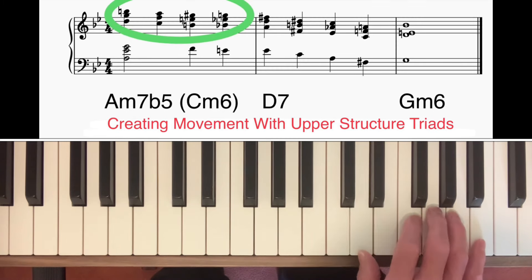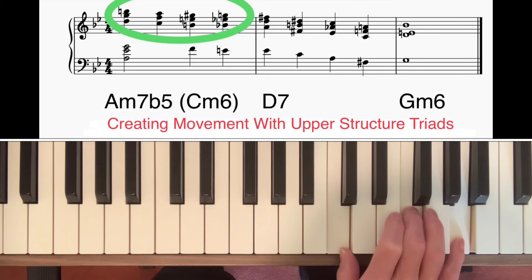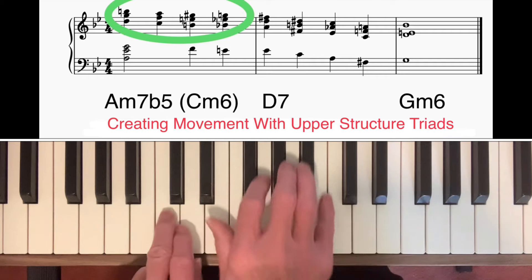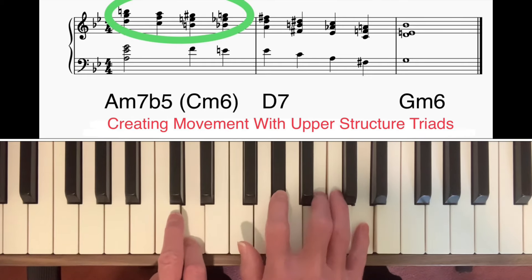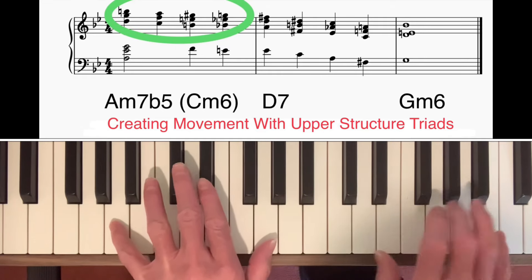Just like on dominant seventh chords, these upper structure triads tend to work best in first and second inversion rather than in root position. There's just one note in the F major triad that I'm playing in the right hand that isn't in the A minor 7 flat 5 chord and that is the F. And once again, Barry Harris would have explained that by saying that has been borrowed from the diminished seventh chord. There is the F in the diminished seventh chord. So, that works nicely.